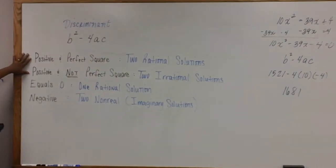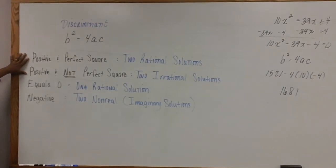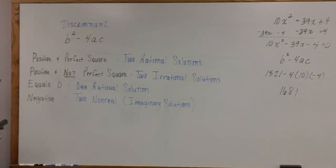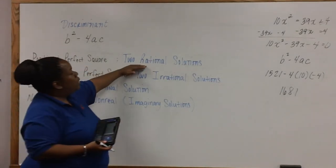So what you want to do is on your calculators, type in square root of 1681. And you get 41, which means that this is a perfect square. So if we were to solve it, we would get two rational solutions.